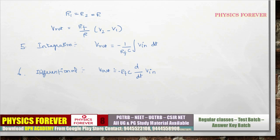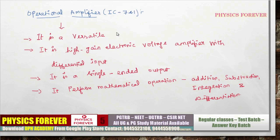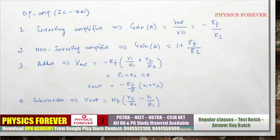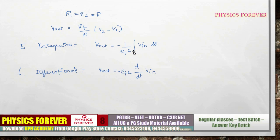These are the most important points to remember about operational amplifiers: the key characteristics of IC741, and the gain formulas for the inverting amplifier, non-inverting amplifier, adder, subtractor, integrator, and differentiator. These are all direct MCQ topics and are very important for the examination.